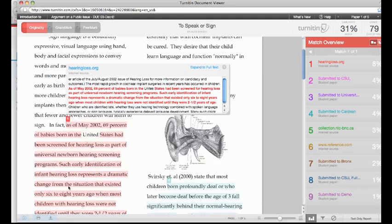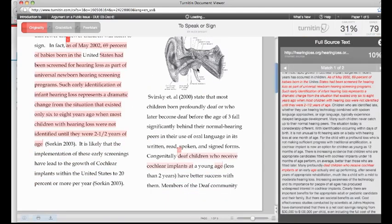Instructors can click on a source to highlight its location in the paper, as well as open a side-by-side comparison of the source's text with the text from the student's work. The complete text of the source is available from the side-by-side comparison, so the instructor can analyze the full context.